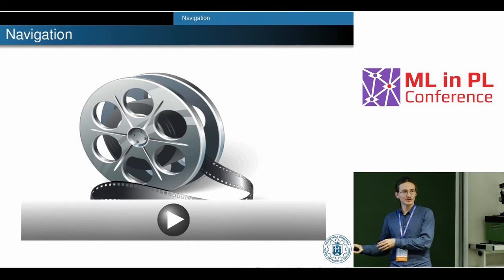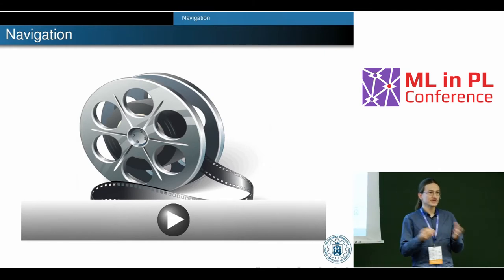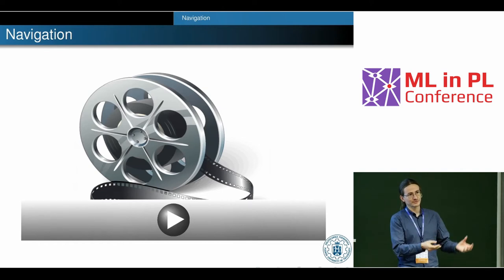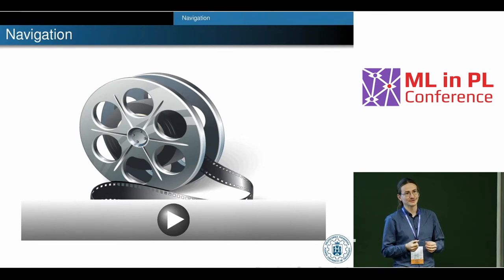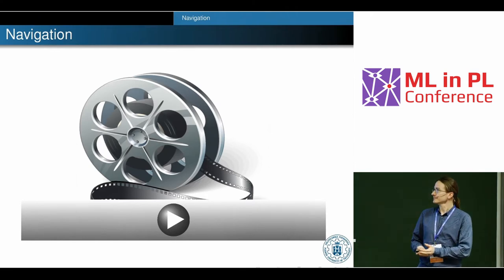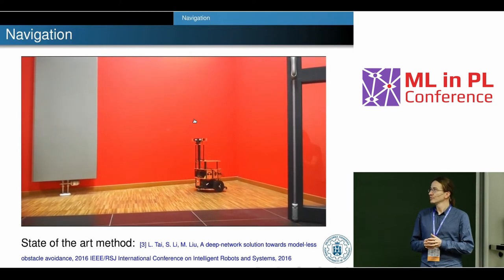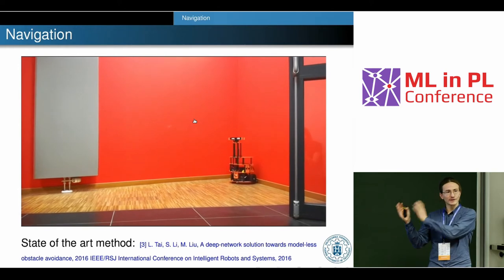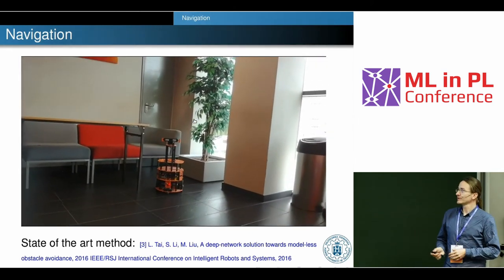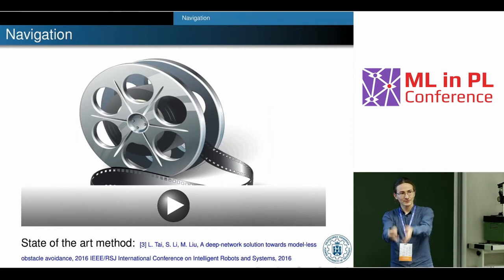The problem is that we spend a lot of time tuning parameters for these models. So we want to use neural networks and train them to navigate the robot. In this scenario, we teleoperate the robot and use the collected data to train the neural network that controls the robot. The state-of-the-art method only reacts: if the robot sees an obstacle on the right it turns left, if on the left it rotates right. The problem is with dead ends — it doesn't know what to do and goes into the wall.